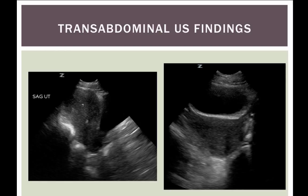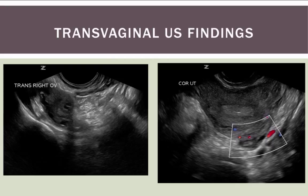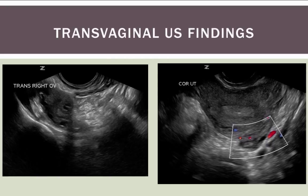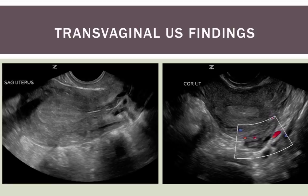Transabdominally, we don't see that much. No significant free fluid, no obvious masses in the adnexa. Transvaginally, our right ovary and left ovary look pretty normal. We don't see anything within the uterus.